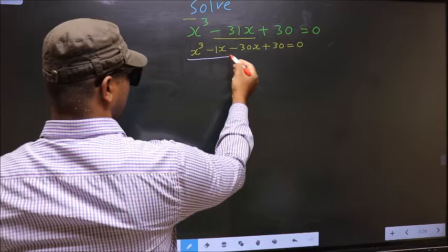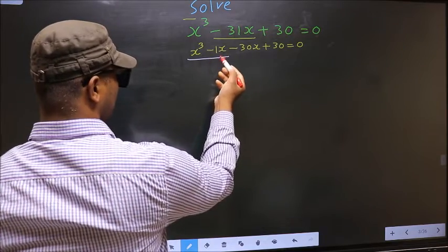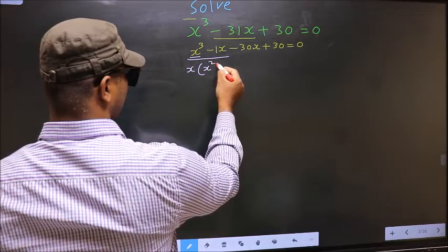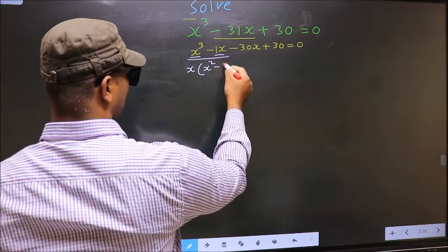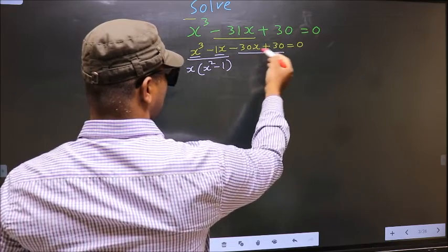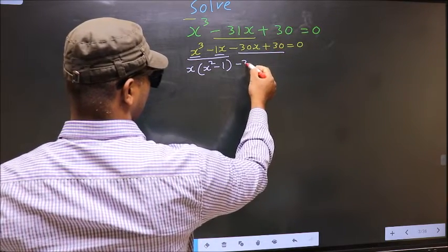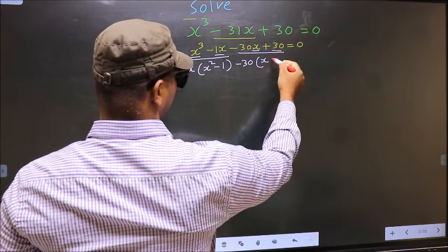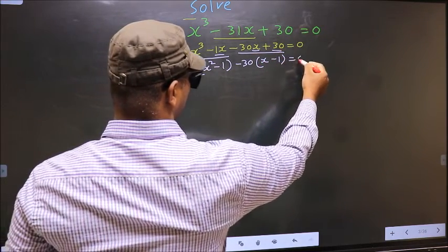Now from these two terms what can be taken out common: x. So here you get x square, minus from this x out you get 1. In the same way from these two terms what can be taken out common: minus 30. So here you get x, here you get minus 1 equal to 0.